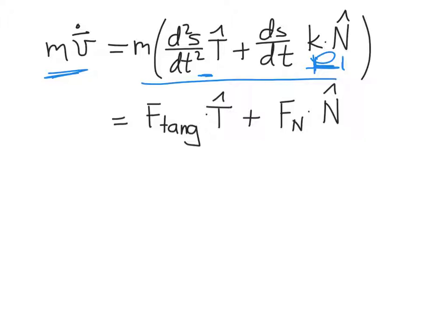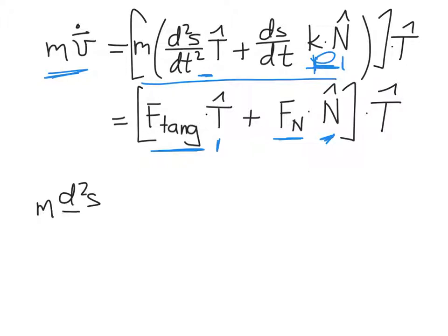m times the acceleration of our mass has to be equal to the forces applied, so we have our tangent force which runs along the T̂ component, and then our normal force which runs along the normal component. We can dot both expressions, both sides of this equation, by T̂ to just consider tangential components, and what we find is exactly what we're looking for. The second time derivative of the displacement is equal to tangent forces. The tangent force drives acceleration along the wire.